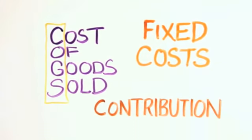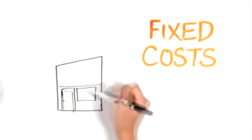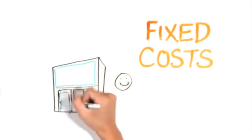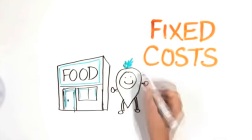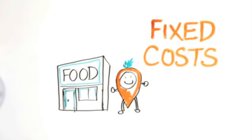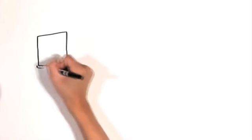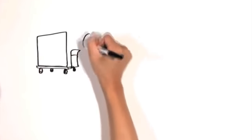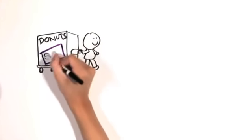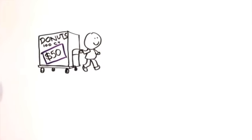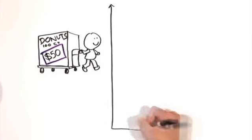Let's get some language to talk about why that is — let's learn about cost of goods sold, fixed costs, and contribution. Fixed cost is the money you'll have to spend no matter how much food you sell; as your sales increase, this cost stays the same — it's fixed. So if you have rent for your storefront, a staff person, and dry cleaning for your carrot costume, those are your fixed costs. Cost of goods sold is essentially how much you paid for what you're selling, and this amount goes up depending on how much you sell.